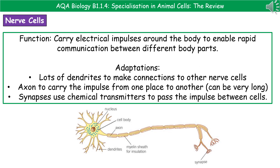The first adaptation is the dendrites — the little branchy sticky-out bits around the cell body. They allow the nerve cell to connect onto lots of other nerve cells, so each branch can connect to another nerve cell and we can amplify that signal really quickly. The second is the presence of an axon, which runs down the middle and carries the impulse from one place to another. The axon itself can be incredibly long — from your spine to your big toe, or even several meters long in other animals.